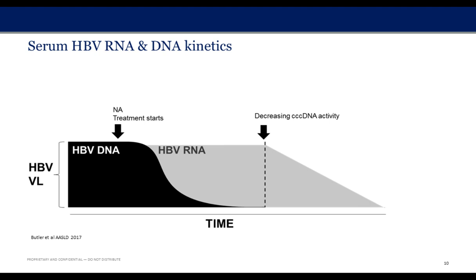This graph, recently published in Butler et al. in Hepatology, illustrates the viral kinetics of Hepatitis B. Traditionally, HBV DNA is at a relatively high level, then drops precipitously once nucleoside analog treatment is started. In contrast, Hepatitis B RNA is not impacted by this therapy, so it remains relatively stable even as the DNA levels drop. Over time, as the CCC DNA becomes less transcriptionally active, the levels of RNA detectable in the plasma decrease.